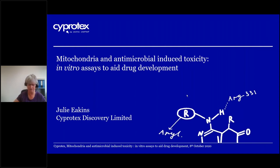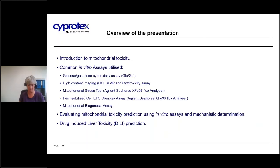I'll give a brief introduction to mitochondrial toxicity and biology, and describe some of the assays we've been utilising. These include simple cytotoxicity assays and more complex assays using the Agilent Seahorse XFE flux analyser. I'll also introduce an assay developed especially for the antimicrobial sector. Using these assays, I'll demonstrate how to not only enhance the prediction of mitochondrial toxicity, but also gain an insight into possible mechanisms. Finally, I'll have a look at drug-induced liver toxicity and the role of mitochondria in that — one of the most frequent sources of compound attrition in both early and late stage drug development.